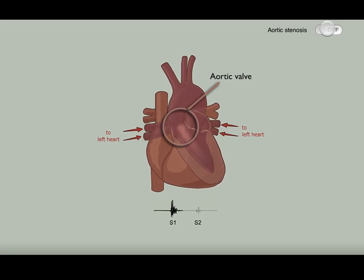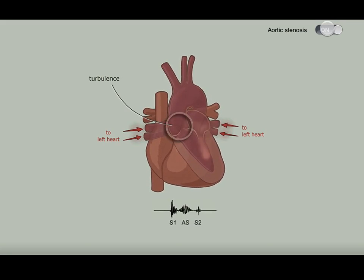This narrowing creates abnormal blood flow and there is turbulence, indicated by the spinning cloud as blood moves through the aortic valve. The sound of the murmur is associated with that turbulence.